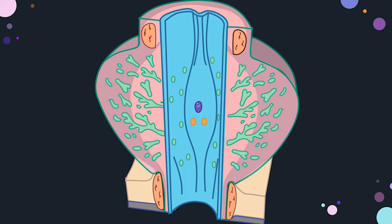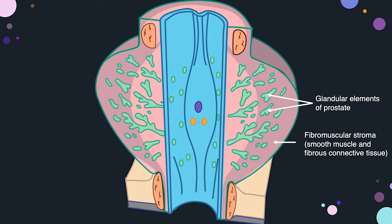We can see the prostatic utricle — a female homologue of the uterus and vagina. The two openings are the openings of the two ejaculatory ducts, and throughout, there are openings of the prostatic glands. These are the glandular elements of the prostate. There is also the fibromuscular part, with different ducts coming from these glands and pouring their secretion into the lumen of the prostatic urethra.